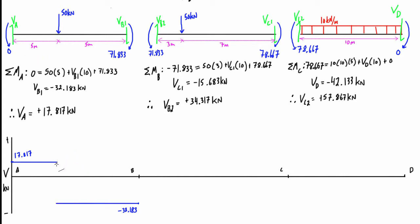At that point load, the shear jumps. If you add up the total change in shear — 17.817 plus 32.183 — that equals a change in magnitude of 50 kN, exactly matching the applied point load. Moving on to span BC, the shear on the left-hand side, VB2 just to the right of the support, is positive 34.317 kN.